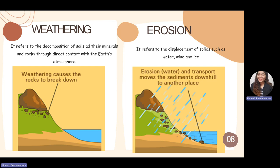There is often confusion between weathering and erosion, so let's define them. Weathering refers to the decomposition of soil, minerals, and rocks through direct contact with the earth's atmosphere. Weathering causes rocks to break down, whether through chemical, biological, or physical processes. Once a rock has been weathered, its size decreases to sediments.